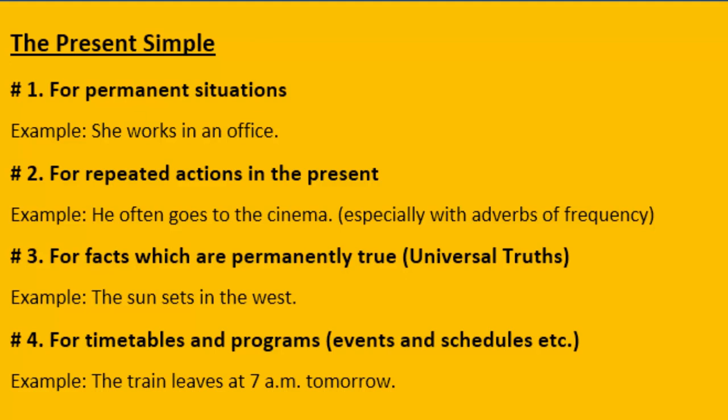Use number one: we use present simple for permanent situations. In simple words, the situations that have been going on and will further go on as they are — something that happened yesterday, is happening today, and will probably happen tomorrow. Such actions are called permanent actions or permanent situations. An example is given before you.